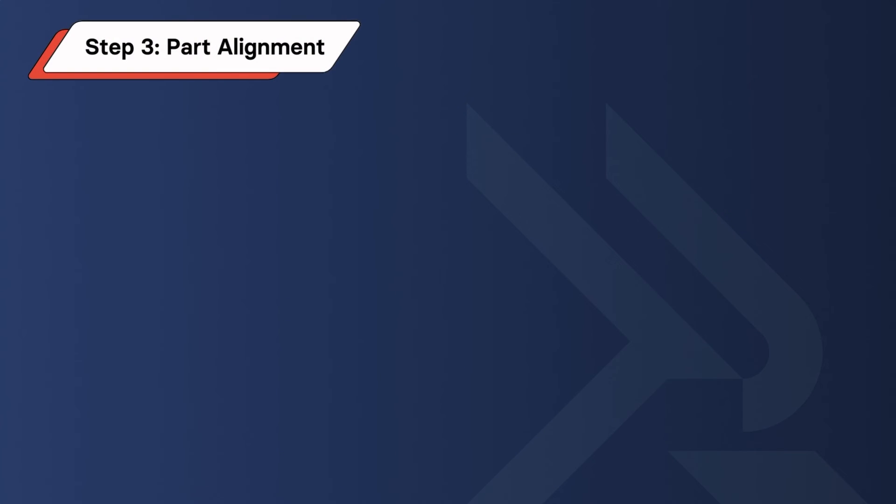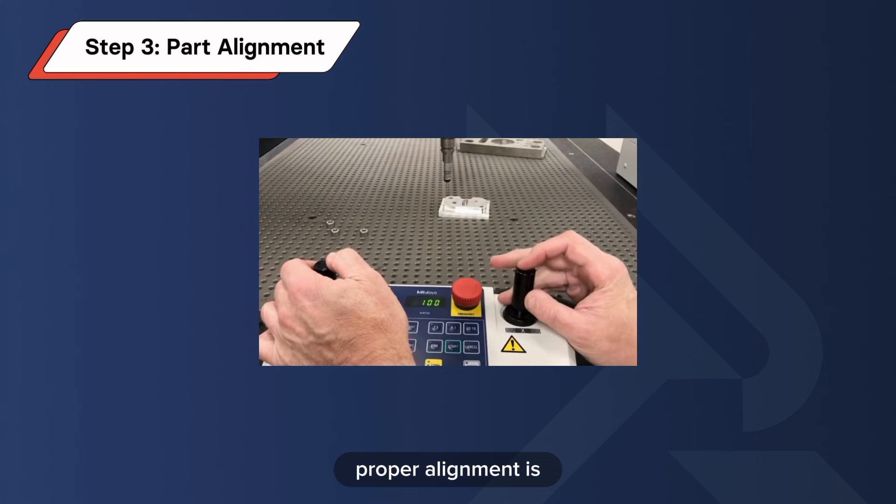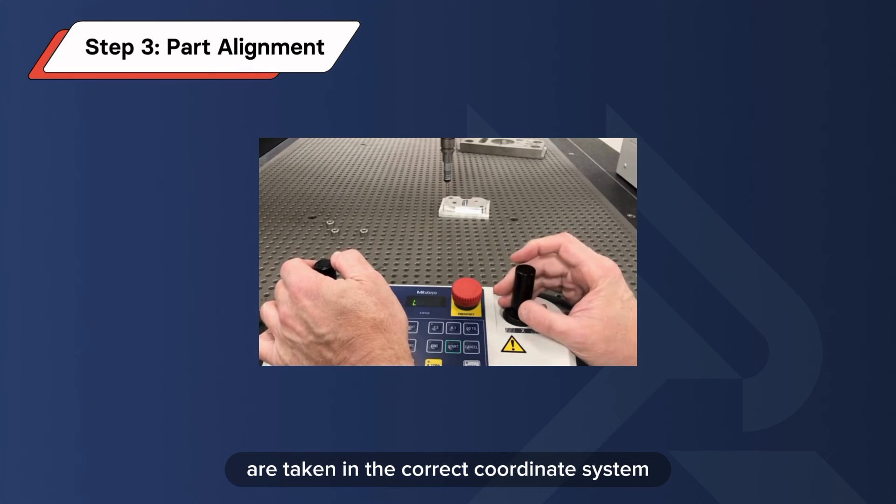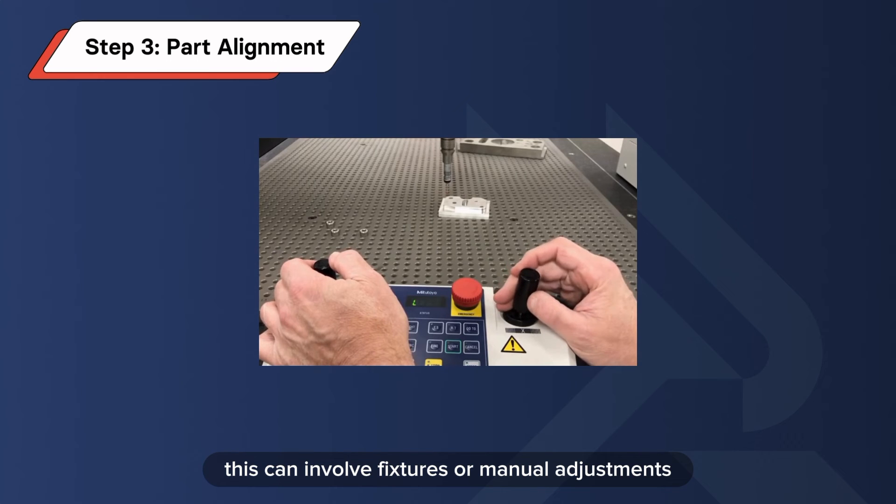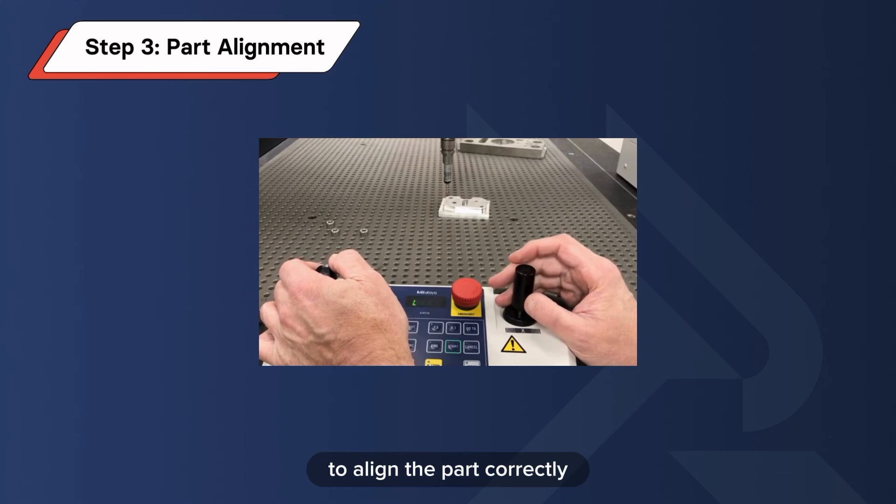Step 3 is part alignment. Proper alignment is essential to ensure that measurements are taken in the correct coordinate system. This can involve fixtures or manual adjustments to align the part correctly.